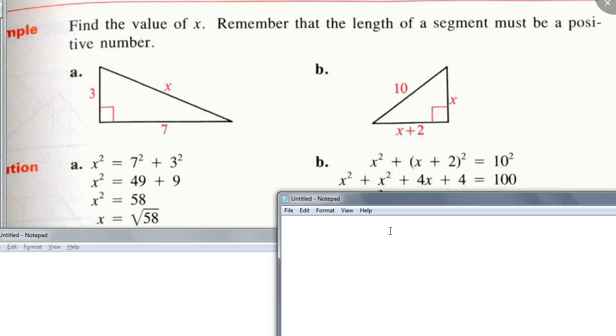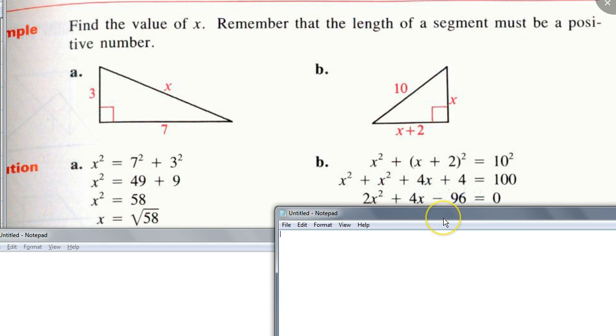Alright, so here we go. You get difference of 2 squared when you have those numbers. Okay. Alright, then what do we do next? This becomes, Darius, you get 2X squared plus 4X minus 96, right? Yeah.